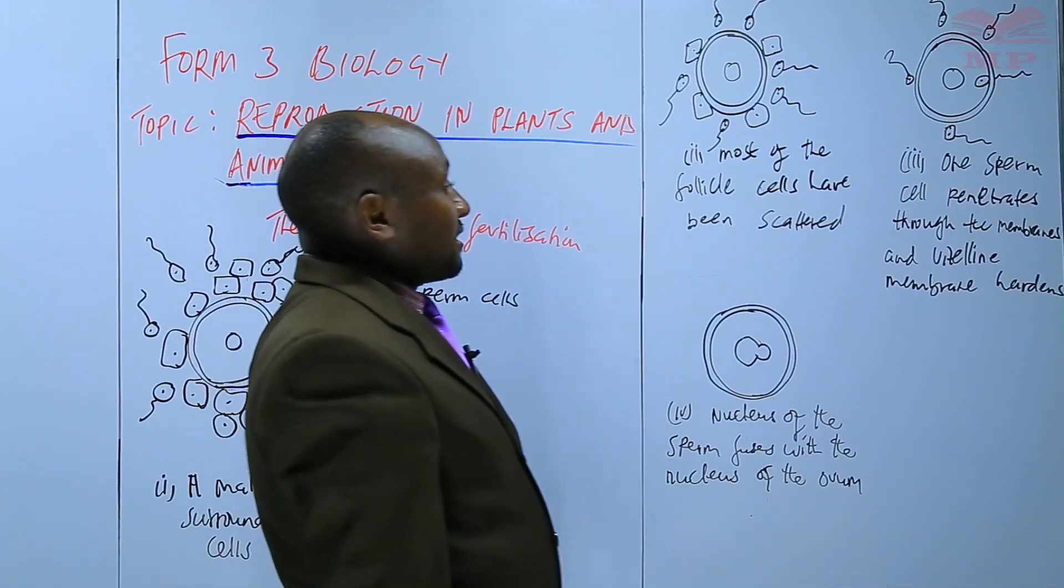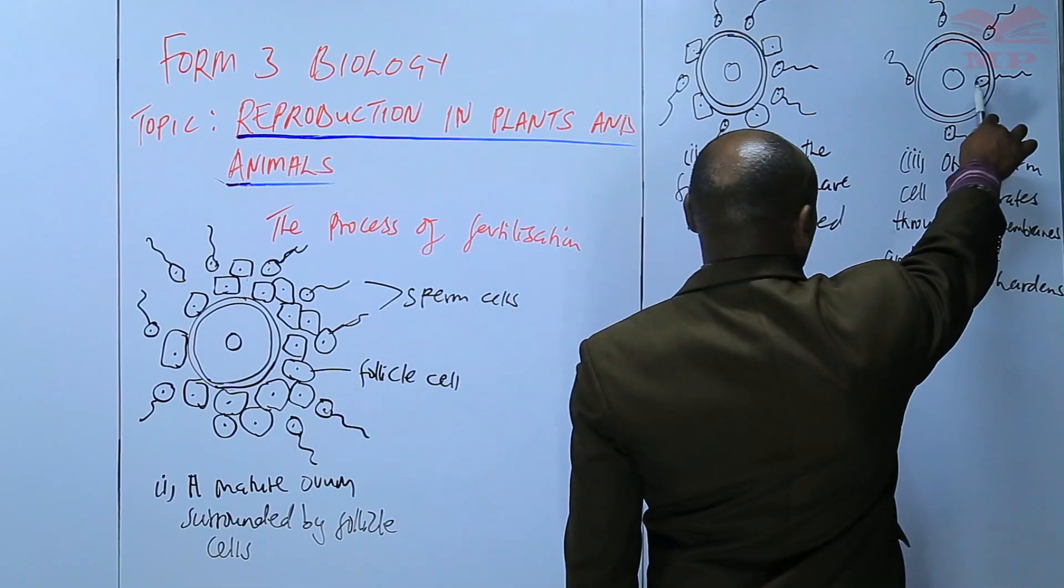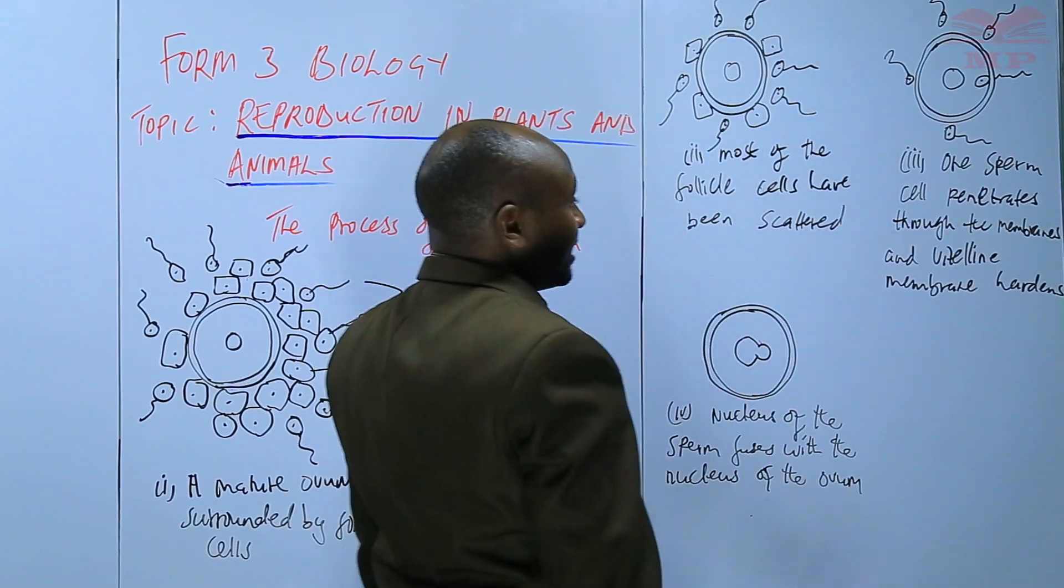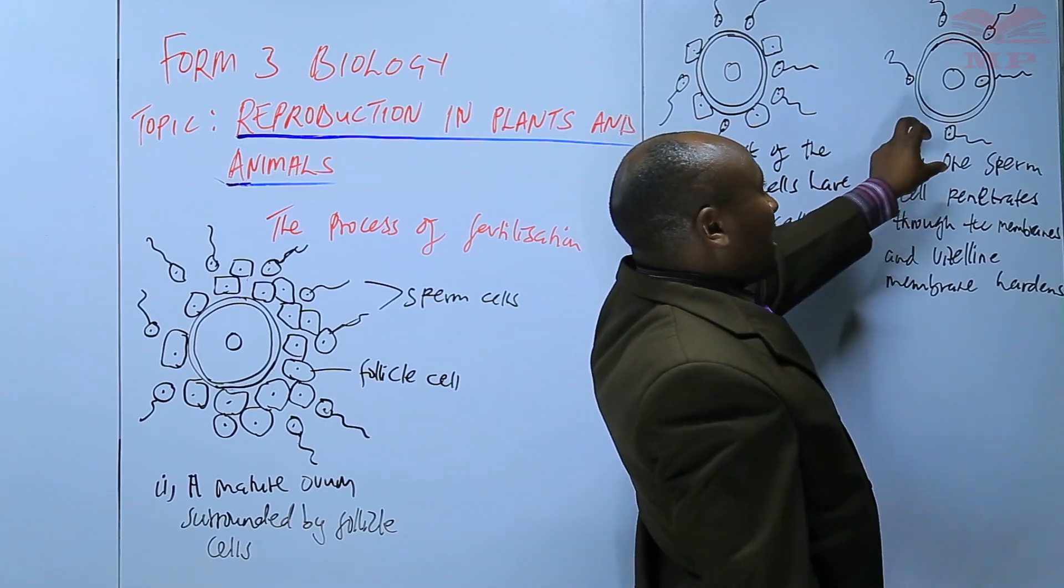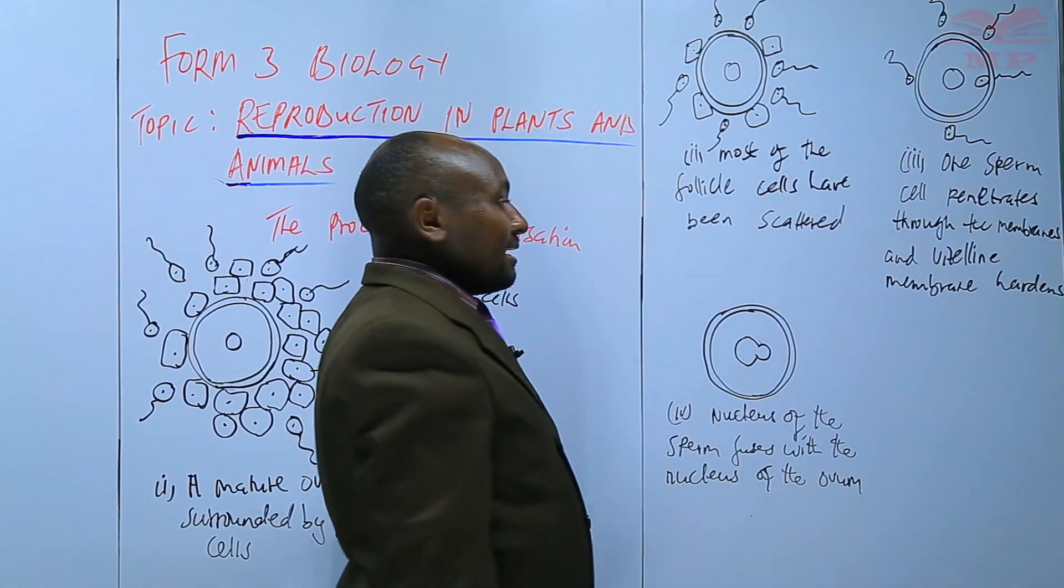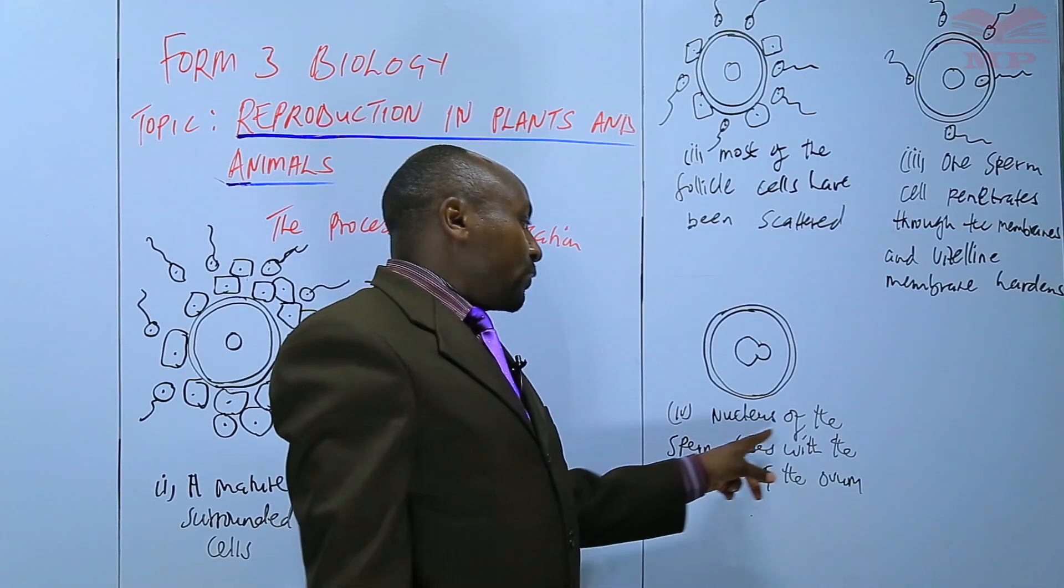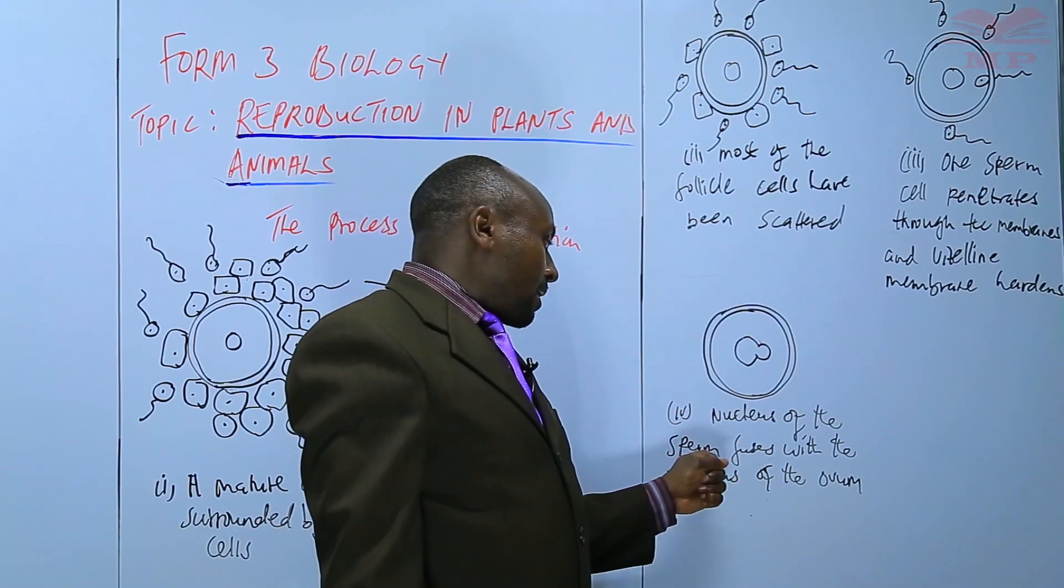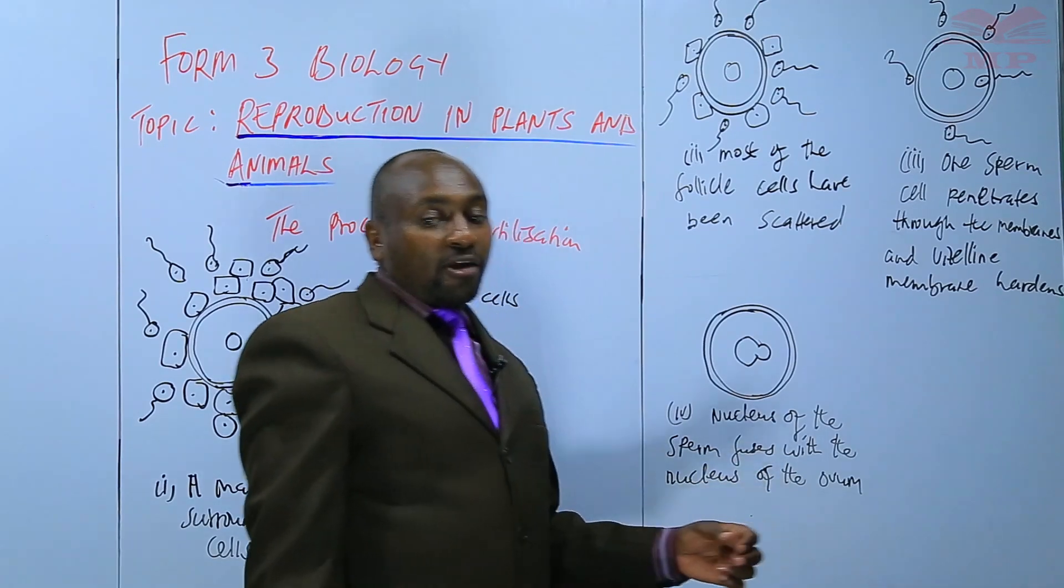After that, only one sperm cell penetrates through the membranes. The vitaline membrane hardens to prevent other sperm cells from penetrating. Finally, the nucleus of the sperm fuses with the nucleus of the ovum.